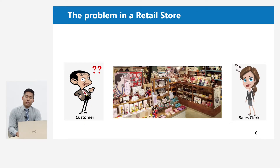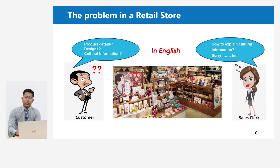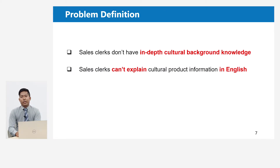So what problem is happening? When foreign customers visit the store, they ask about product details, design, and cultural information, especially in English. In this case, the sales staff can explain some information about the product, but they have difficulty explaining cultural product information in English. Why is this problem happening? Because the sales staff don't have in-depth cultural background knowledge and cannot explain cultural product information in English.